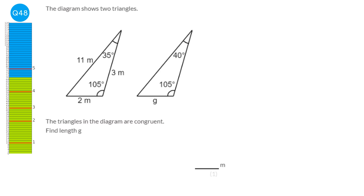We label the missing angles on each triangle. The missing angle in one triangle is 40 degrees — taking away 105 and 35 from 180. The missing angle in the other is 35 degrees — taking away 105 and 40 from 180. The tempting answer is to say g is 2 metres because they're both at the bottom, but g is between 35 degrees and 105 degrees, while the 2 metres is between the 40 degrees and 105 degrees. Looking at the left-hand triangle, the corresponding lengths are these two — and because they're congruent triangles, the lengths are the same.